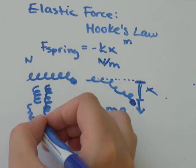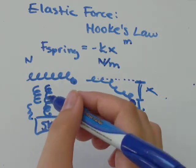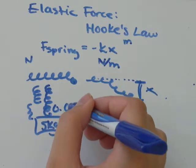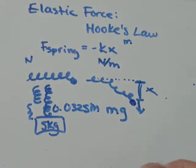And the spring stretches to be, let's say its rest position looks like this. The amount it's stretched, because of the weight, is 0.0325 meters. And we're asked to find K, the spring constant.